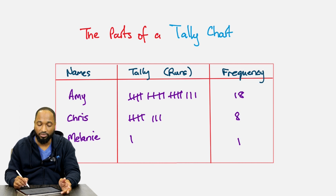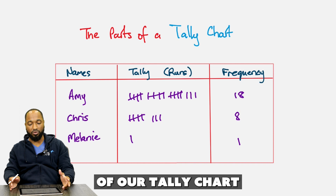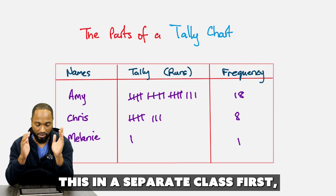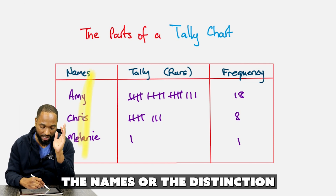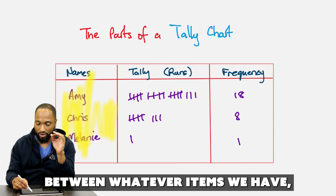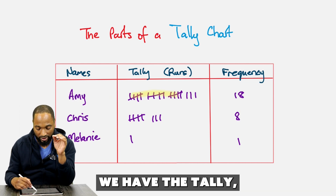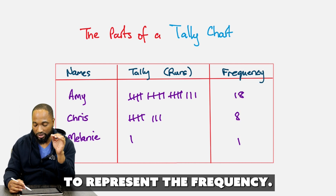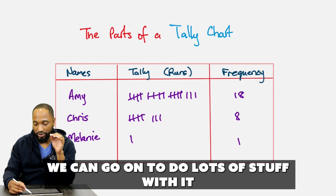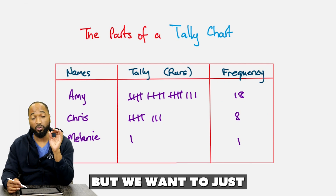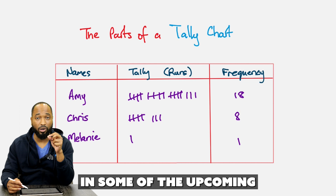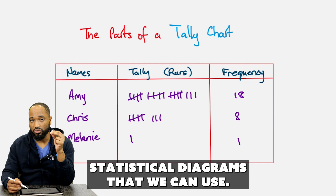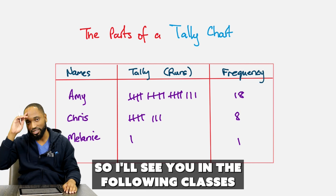And this is one. So those are the different parts of our tally chart. We have the names or the distinction between whatever items we have, we have the tally, and then we use a number to represent the frequency. With that frequency number, we can do lots of things — we'll venture into a few in upcoming classes, like bar graphs and different statistical diagrams. See you in the following classes — love and blessings.